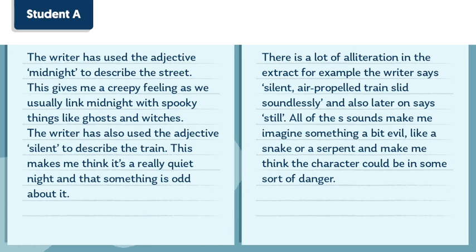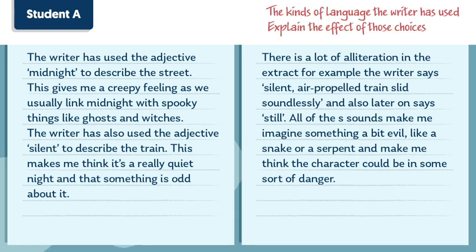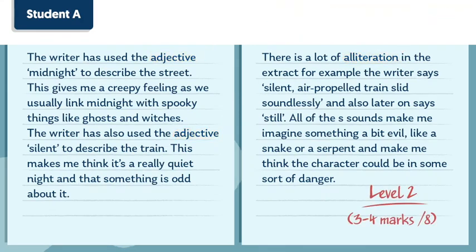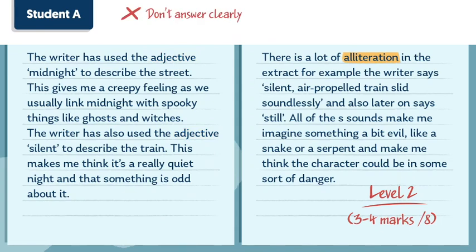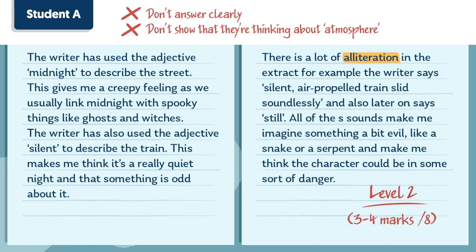Student A has written quite a sensible response here. They've definitely thought about the kinds of language the writer has used, and they do try to explain the effect of those choices. Their terminology and examples, such as the use of adjectives and alliteration, are correct too. An answer like this would probably meet all of the descriptors for level 2, and would most likely earn you the top of the level. But they've used adjective twice, so they don't really show a lot of knowledge here. They pick out alliteration, but their comments on effect perhaps don't answer the question in a way that's really clear, or that shows they're thinking about the word atmosphere.